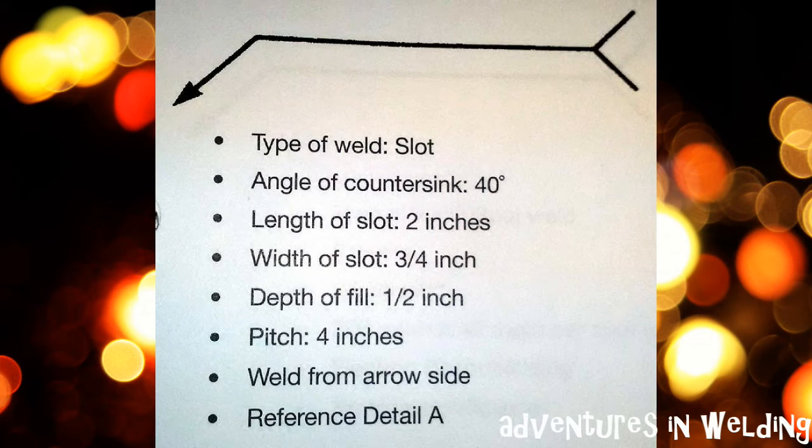Okay, here we go with another draw-the-welding-symbol. This will be a slot weld with a 40 degree countersink. The slot will be 2 inches, the width of the slot will be 3/4 inch, filled to 1/2 inch, with a pitch of 4 inches, weld on the arrow side, and you are to reference detail A in the drawing. I know that's not shown here, you just need to mark the reference. Alright, ready, set, go.